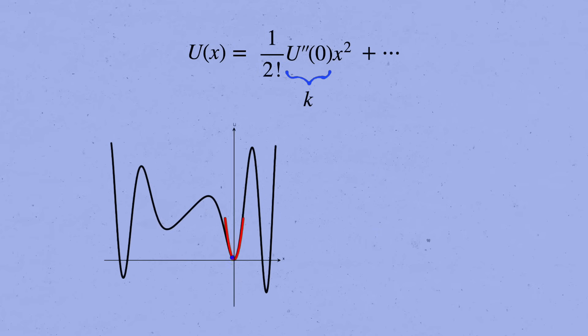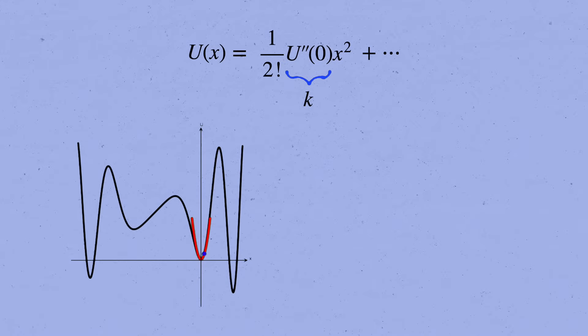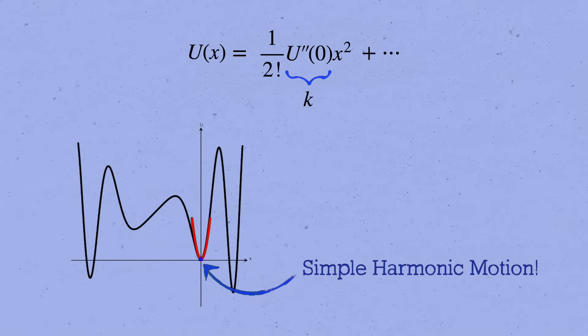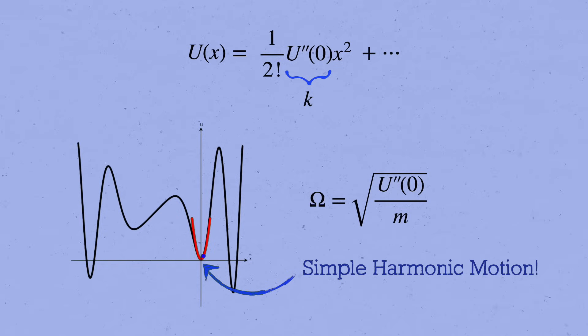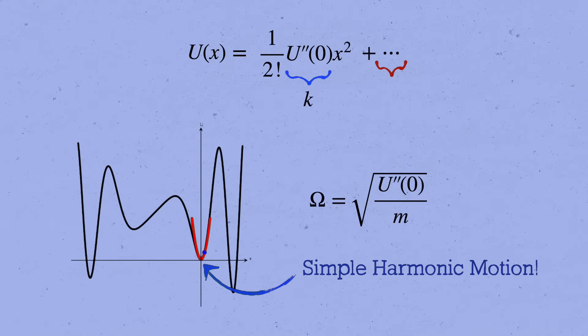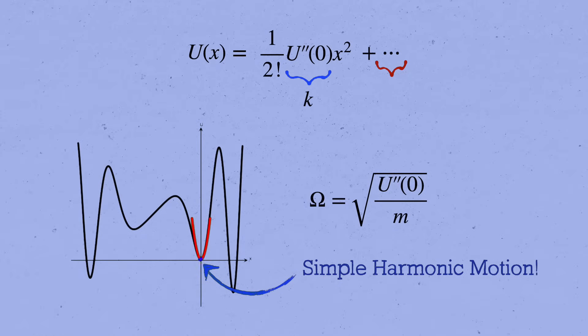A particle that's released there will oscillate around the equilibrium in simple harmonic motion, with natural frequency square root k over m. That is, omega equals the square root of u double prime of zero divided by m. To understand the physics farther away from the equilibrium points is usually much harder. The bigger x gets, the more important the higher power corrections in the Taylor series, like x cubed and x to the fourth, become. But we can often get approximate solutions by treating those as perturbations of our harmonic oscillator solution.